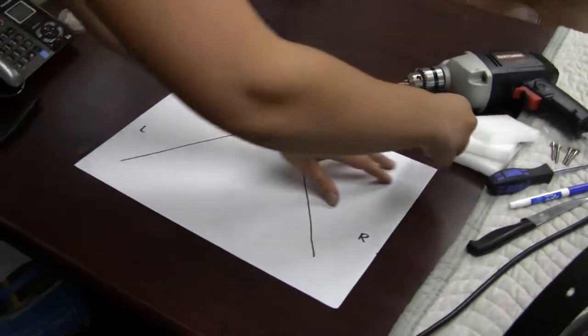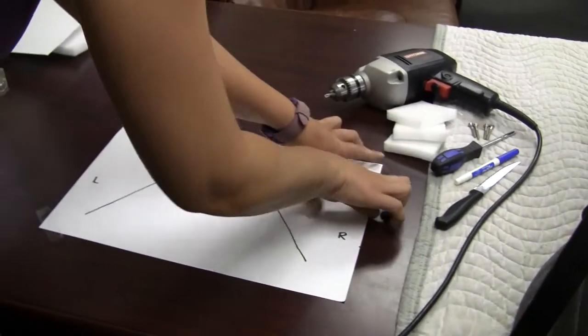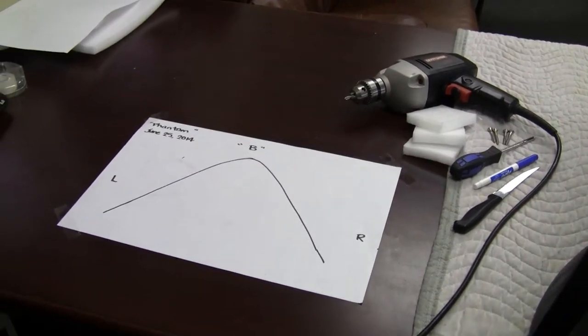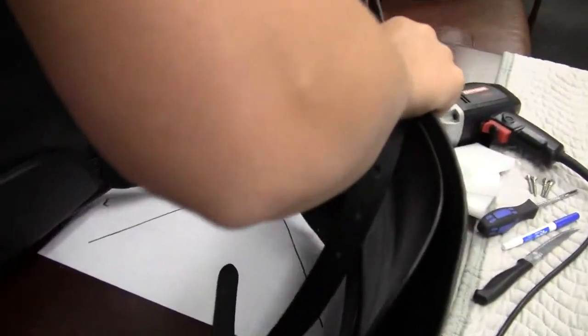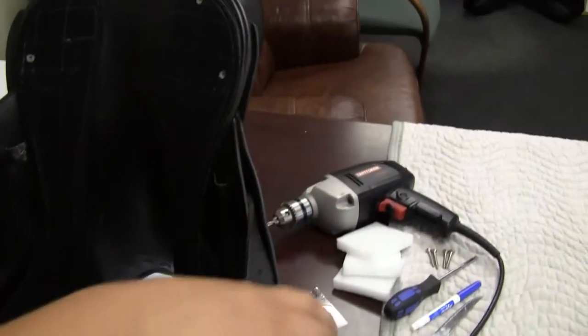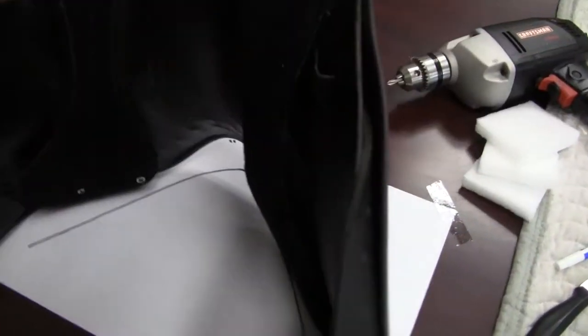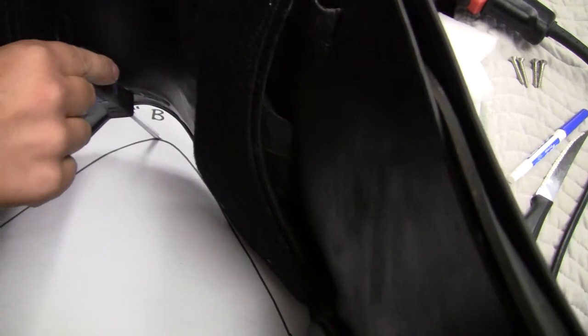These templates are taken where you place the front edge of your saddle, so once the templates are secured to the table you simply pick up your saddle, place it onto the templates with the pommel of the saddle about even with the top of the template.